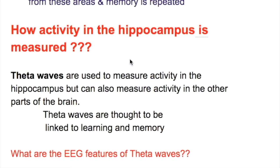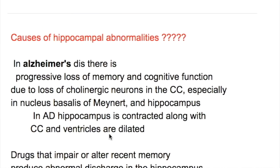How is activity in the hippocampus measured? Theta waves are used to measure activity in the hippocampus but can also measure activity in other parts of the brain. Theta waves are thought to be linked to learning and memory. The EEG features of theta waves show that they are mainly large regular waves.